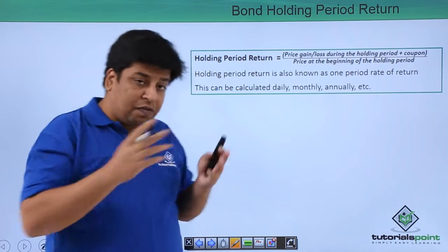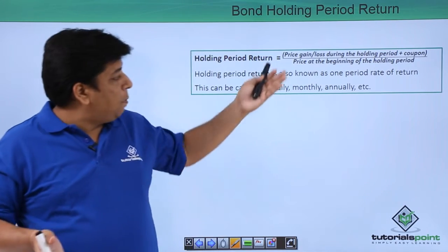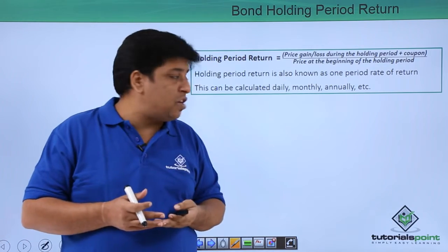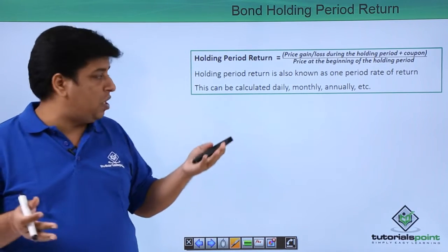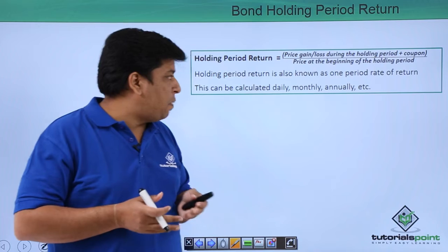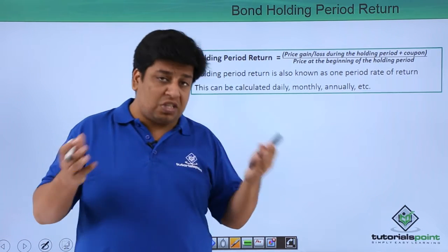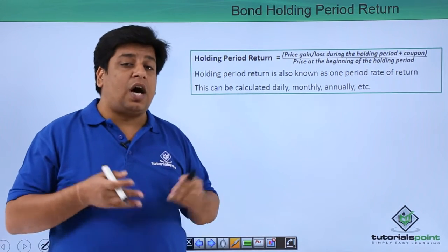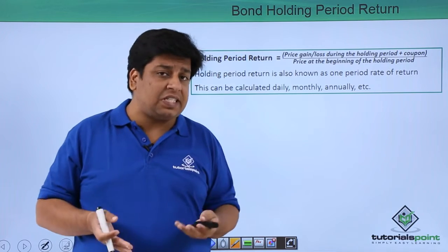So difference will be your profit or loss, plus coupon. Coupon is the interest that you have earned for this duration. The whole divided by price at the beginning of the holding period. So this is the way we calculate our holding period return. Let's take an example.